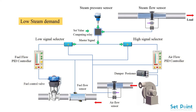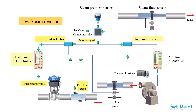When the steam demand is low, the low signal selector permits the master signal to the fuel flow controller. The fuel flow controller decreases the flow of fuel by adjusting the fuel valve. As the fuel flow decreases, the fuel flow sensor transmits the signal to the high signal selector and the fuel flow controller. The selector then sends the master signal to the air flow controller to decrease air flow by adjusting the damper.